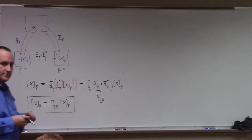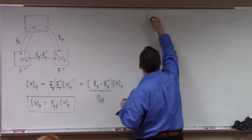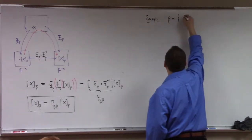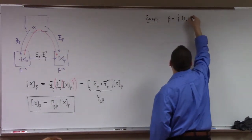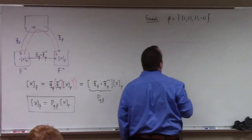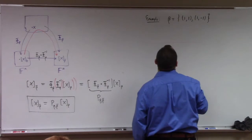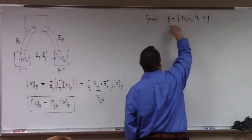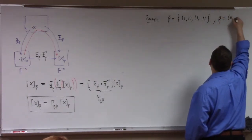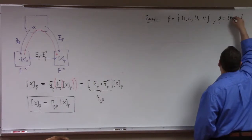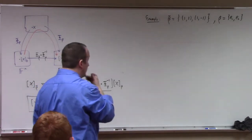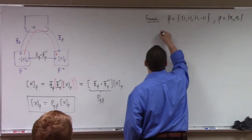Let's do an example. Let beta-bar equal the vectors (1,1) and (1,−1), and let beta just be the standard basis.